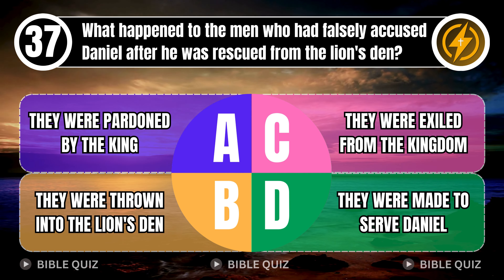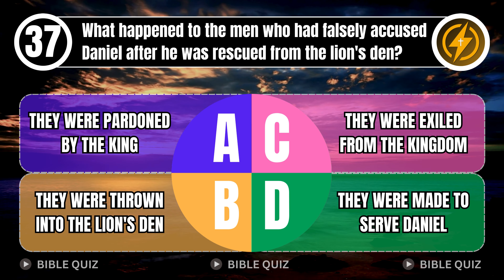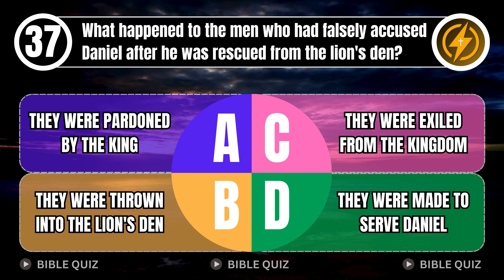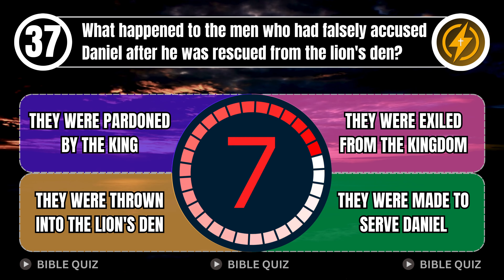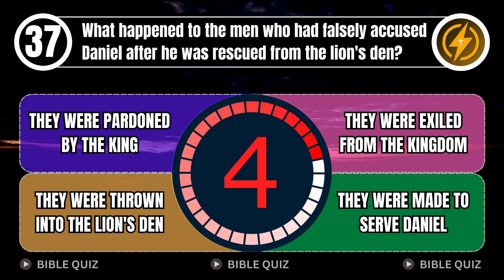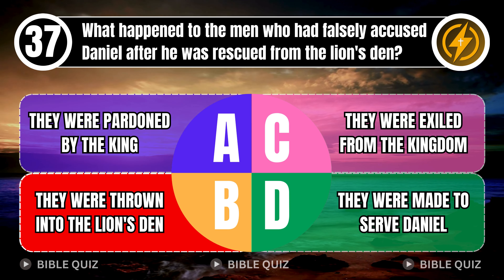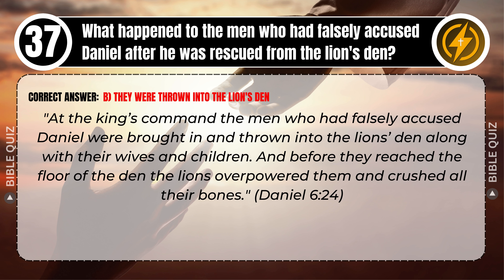Question 37: What happened to the men who had falsely accused Daniel after he was rescued from the lion's den? A. They were pardoned by the king. B. They were thrown into the lion's den. C. They were exiled from the kingdom. D. They were made to serve Daniel. Correct answer: B. They were thrown into the lion's den. At the king's command, the men who had falsely accused Daniel were brought in and thrown into the lion's den, along with their wives and children, and the lions crushed all their bones. Daniel 6 verse 24.